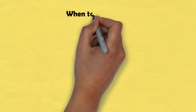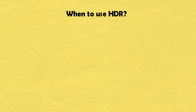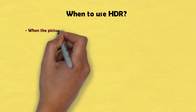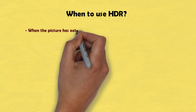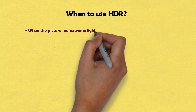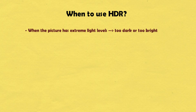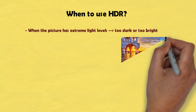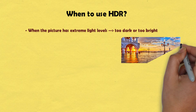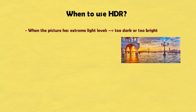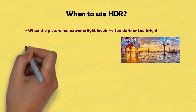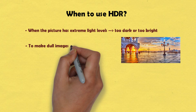So now the question arises: when to use HDR? HDR should be used when the subject or picture you want to capture has extreme light levels — too dark and too bright in the same frame. You can also use HDR to make dull images appear vivid and crisp, as this technique brings out colors which make images feel pleasing.